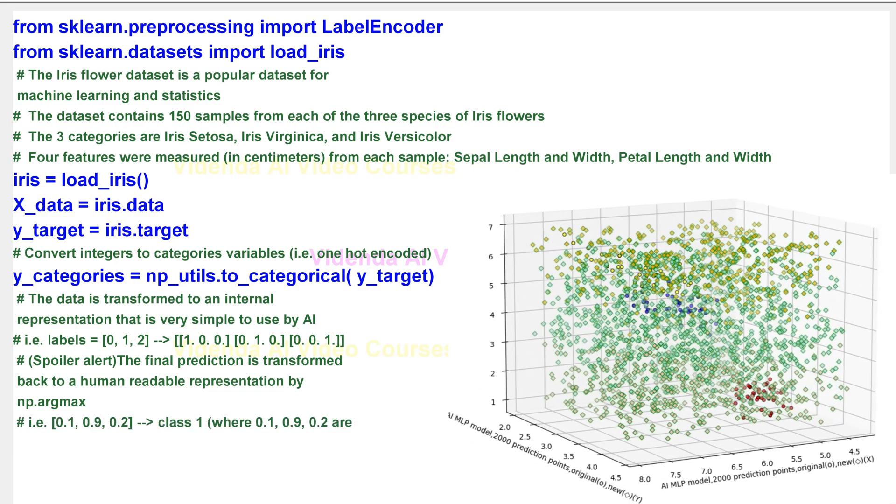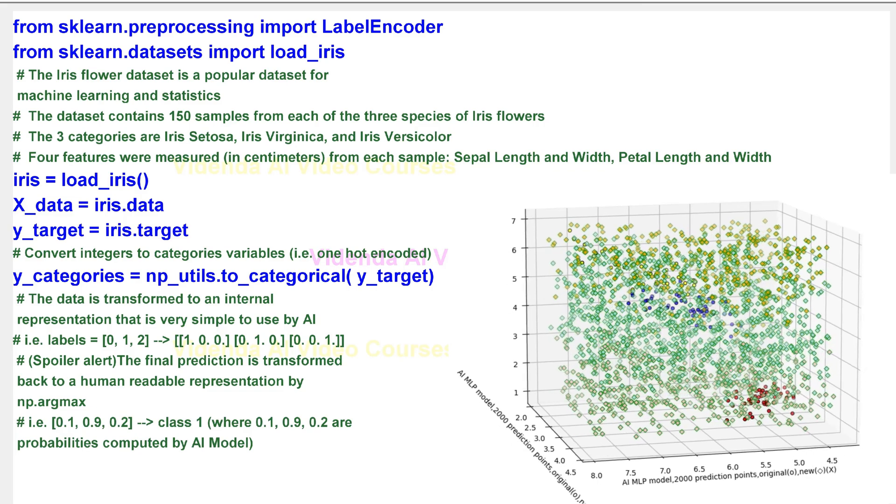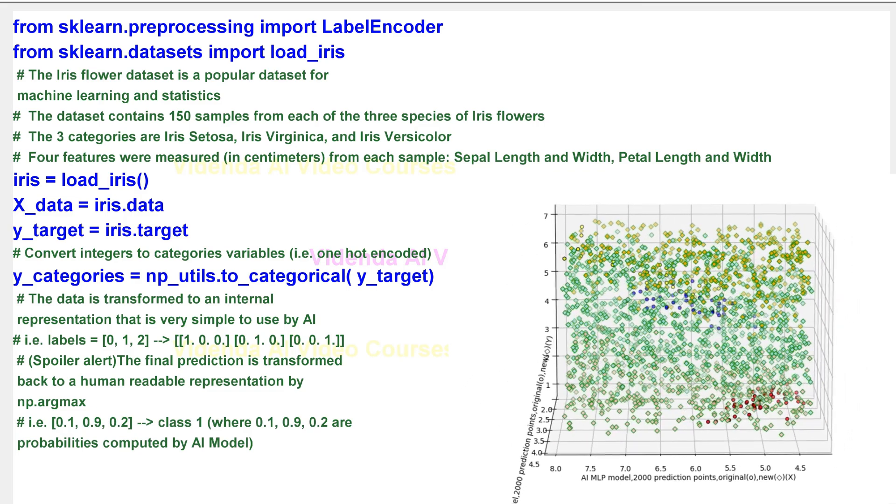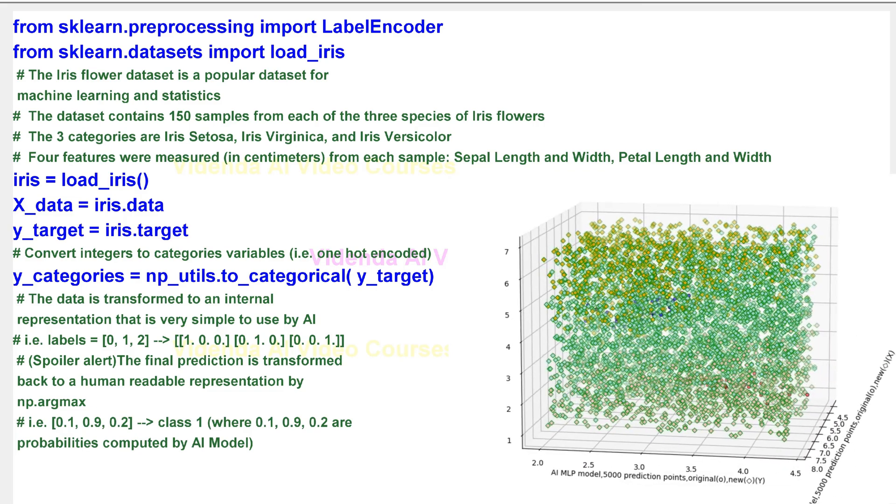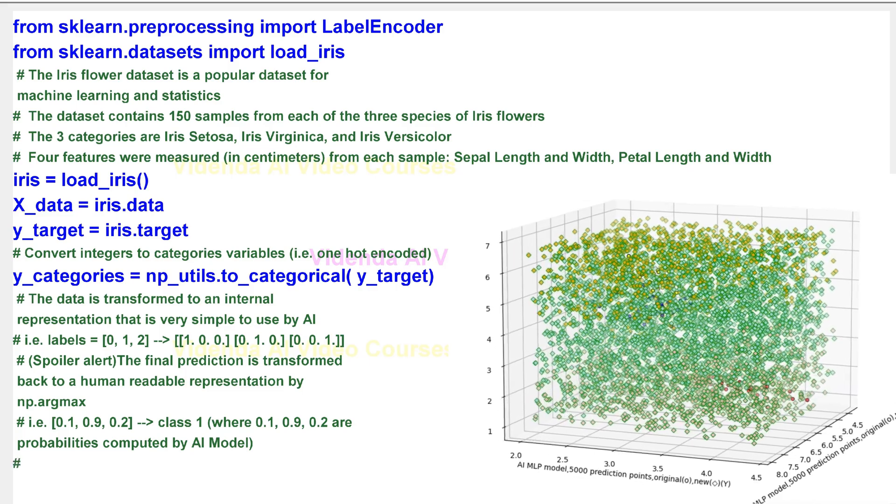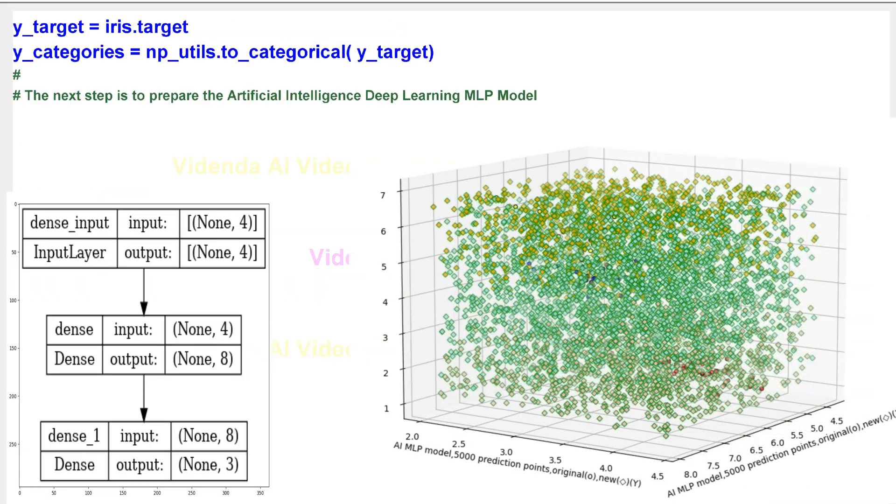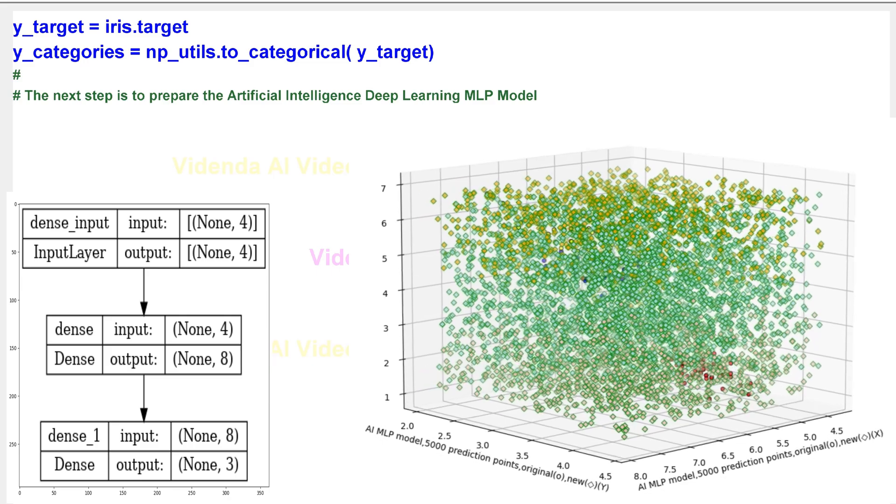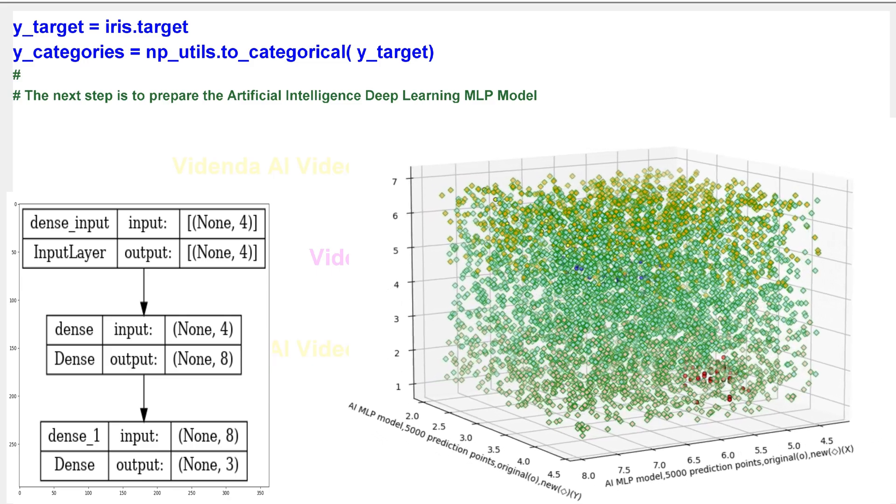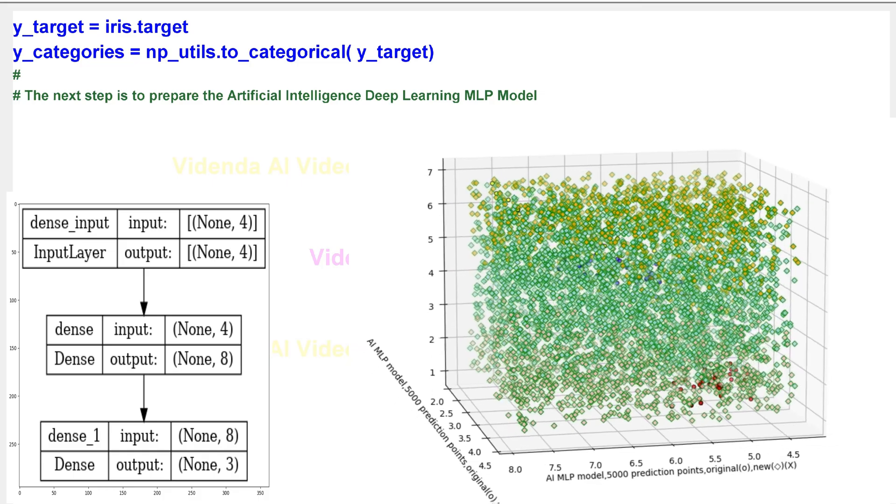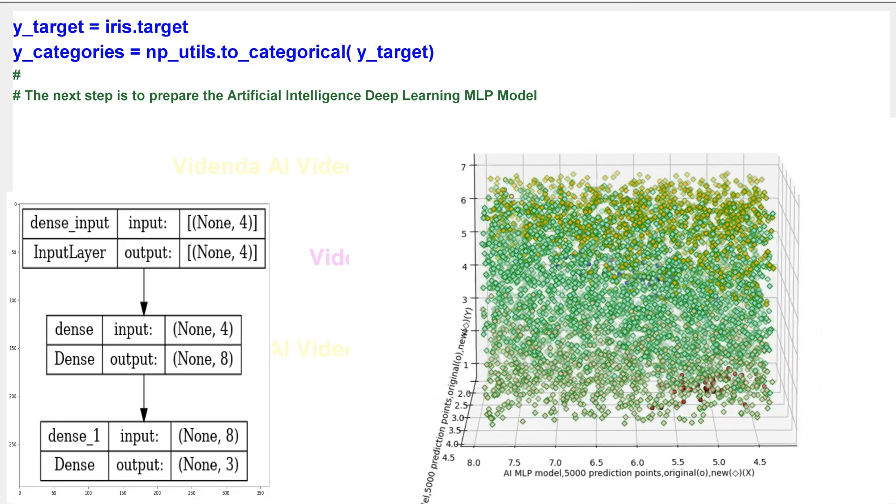Spoiler alert! The final prediction is transformed back to a human-readable representation by NP argmax. For example, probabilities 0.1, 0.9, 0.2 become class 1, where 0.1, 0.9, 0.2 are probabilities computed by AI model.